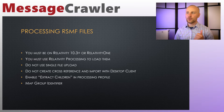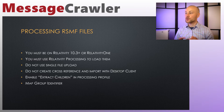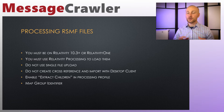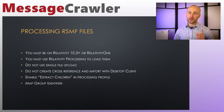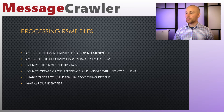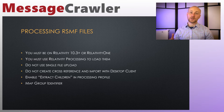Requirements: you must be on Relativity 10.3 or higher. Relativity 10.2 has partial support for RSMF, but you probably don't want to process RSMF files in that version. You must use Relativity Processing to load data — do not use single file upload, do not create a cross-reference file to load with a desktop client. When processing, make sure you enable Extract Children so all attachments are extracted, and make sure Group Identifier is mapped correctly so families are grouped together.